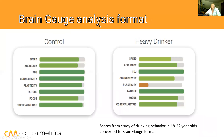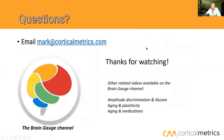Looking at the results put into the Brain Gauge score format, the controls all look normal. But heavy drinkers — those who drank more than 60 drinks per month — showed significant impact mainly on their plasticity score. That's the thing to look for in Brain Gauge scores if you suspect someone is drinking heavily. Thank you for watching — that was a quick overview of our findings on alcohol studies using the Brain Gauge.